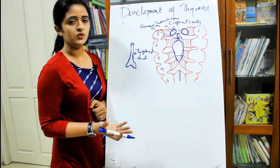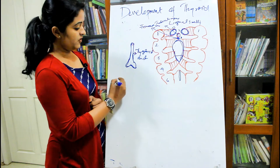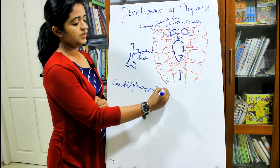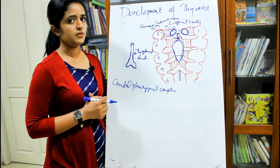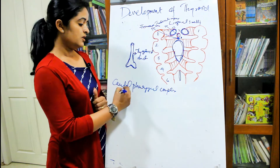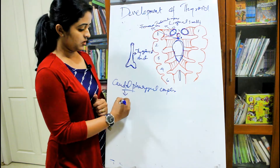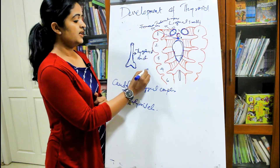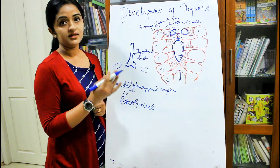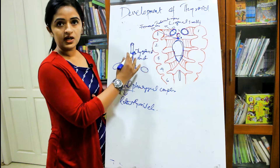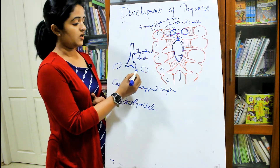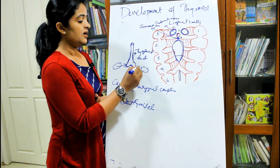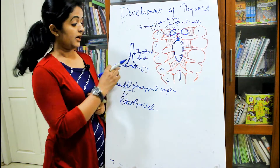The thyroglossal duct starts from the tongue, passes through it, and travels in the neck in front of the trachea. What controls its downward growth? When we discussed the endodermal pouches, we mentioned the caudal pharyngeal complex — formed by the fourth and fifth pouches. This caudal pharyngeal complex has three elements, one of which is the lateral thyroid element on either side. This acts as a check tissue that limits the downward growth of the thyroglossal duct.